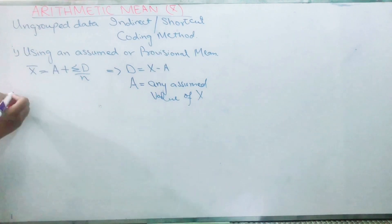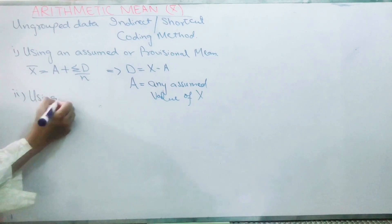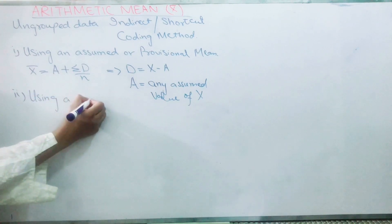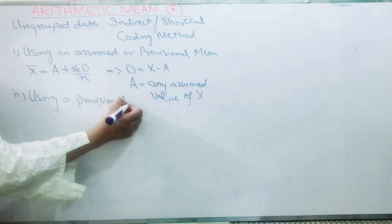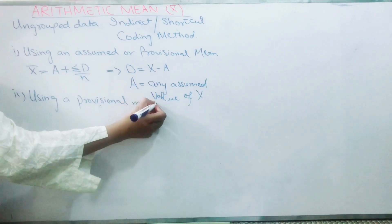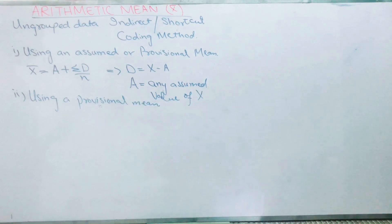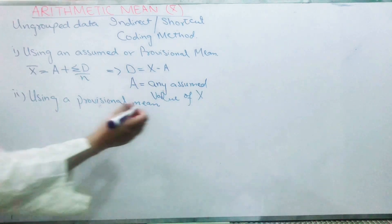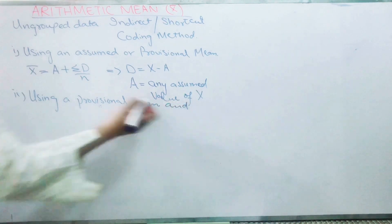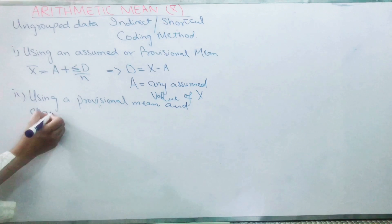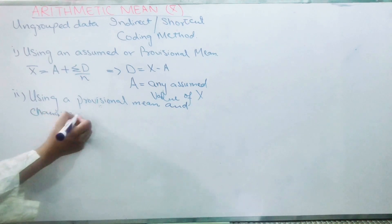I'll tell you while I'm doing the question. Second method is using a provisional mean and changing the scale of the variable.